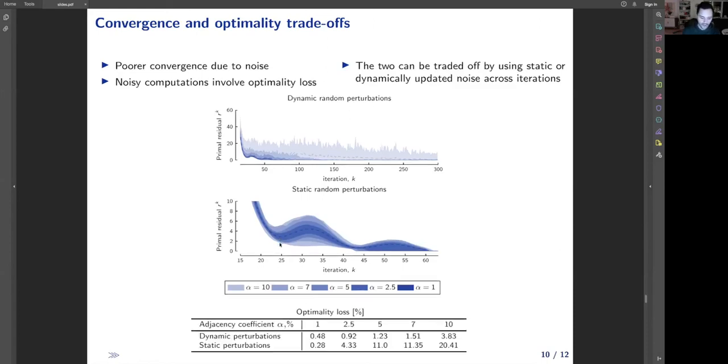However, what we have shown is that dynamic perturbations reduce small optimality loss, while static perturbations persistently steer OPF solution away from optimal solution. So we have tradeoffs between convergence and optimality loss.